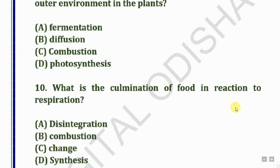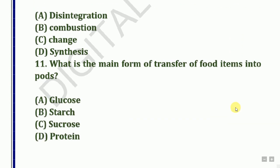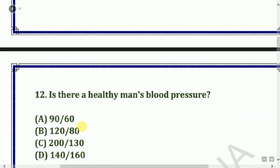Next question: What is the main process of food transfer via respiration? Also, is there a healthy man's blood pressure? Answer: 120 by 80.